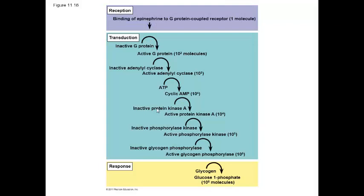Here we see the pathway caused by epinephrine. Epinephrine is a unique ligand because it works as both a neurotransmitter in the nervous system (local communication) and as a hormone in the endocrine system. We commonly call epinephrine adrenaline. Epinephrine binds to a G-protein coupled receptor, initiating a transduction pathway with a phosphorylation cascade. In the liver, epinephrine causes glycogen, which is a polysaccharide, to be broken down into glucose. The liver will then flood the bloodstream with glucose.